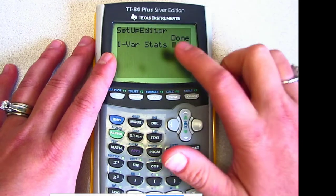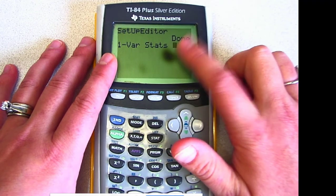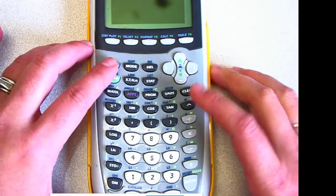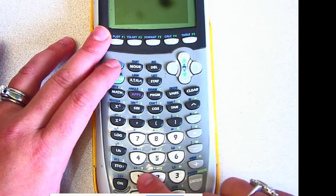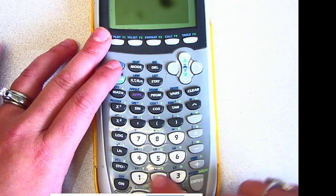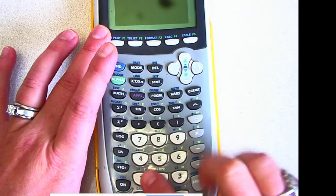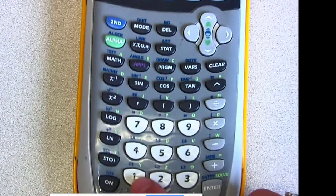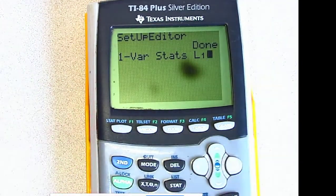By default, your calculator will draw from List 1. If it was not in List 1, this is where you would tell it. Push 2nd, and you'll see options above the number pad: blue L1, L2, L3, etc. Mine is in List 1. I don't have to do this, but I'm going to push 2nd, select number 1, and my calculator shows L1.